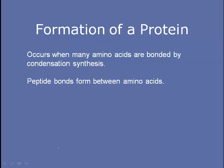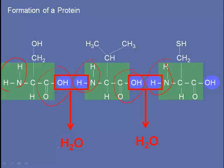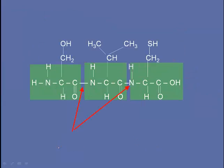Peptide bonds form between the amino acids. If we take a look at these three amino acids, you'll probably notice the three important parts — they all have an amino group and a carboxyl group. So we have three amino acids here. Take a hydroxyl group off of one and a hydrogen off of the other and you'll get water. What we see here is the formation of two peptide bonds because we've now linked three amino acids to each other, and we've also formed two molecules of water.